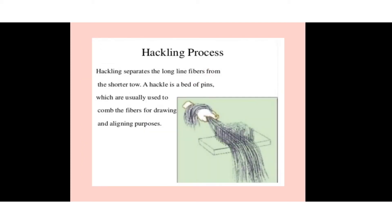In the hackling process, the long, clean fibers are separated from the shorter ones. Hackles — a bed of pins — are used to comb the fibers, drawing them into alignment in a straight line. This separates the long fibers from the short fibers.